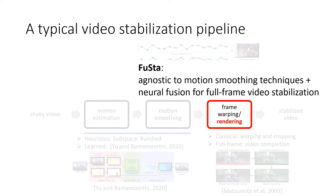In contrast, our FUSTA focuses on synthesizing full-frame video outputs. Our work builds upon existing 2D motion estimation and smoothing techniques and is agnostic to the motion smoothing techniques. FUSTA leverages neural rendering to encode and fuse warped appearance features and learn to decode the fused feature map to the final color frames.